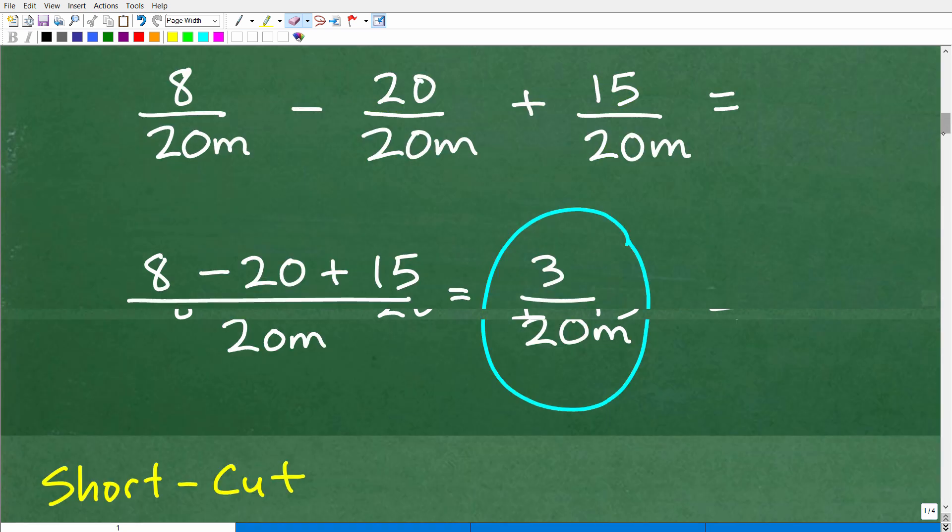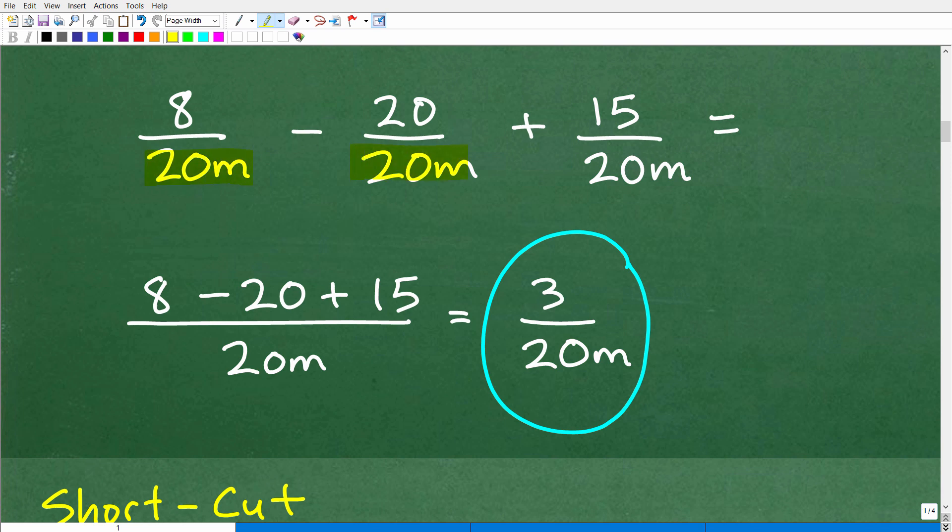So again, we needed to understand how to find the LCD, which is 20M, and then rewrite these fractions such that these respective fractions have 20M as their denominator. Now what do we do? We're going to handle this just like any other fraction problem. If they all have the same denominator, common denominator, what we can do is simply just deal with the numerator. So this would be 8 minus 20 plus 15. Remember, when you're dealing with variable fractions in algebra, you're following the same principles, procedures as you're dealing with arithmetic. So I have the same denominator, so I could simply just add or subtract the respective numerators. So 8 minus 20 plus 15 will give me 3 over the denominator, 20M. This is our answer.